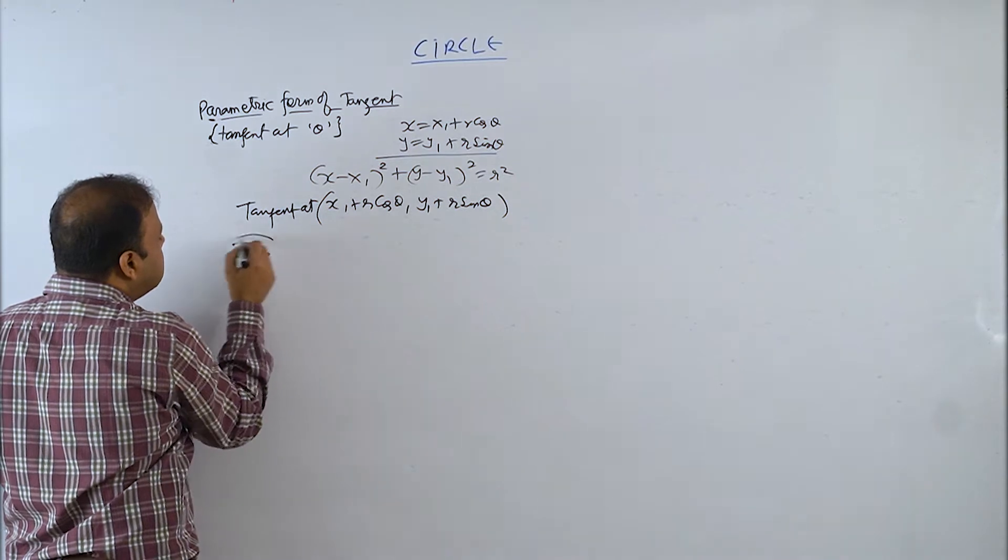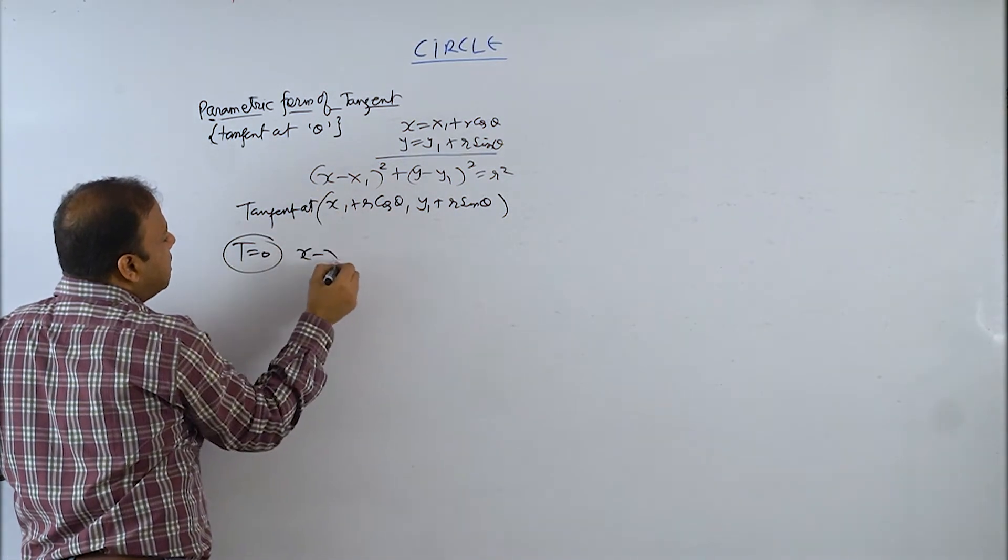Tangent equation T equals zero will give us x minus x1 whole square.